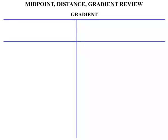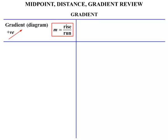Now let's consider gradient. The gradient from a diagram: M equals the rise over the run. If the line is going uphill from left to right, we say it has a positive gradient. If the line is going downhill from left to right, we say it has a negative gradient. The gradient formula is M equals (Y1 minus Y2) over (X1 minus X2).